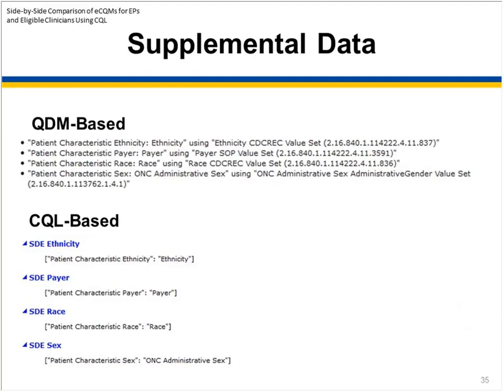Looking at the supplemental data section: we include the data criteria in the data criteria section, and in the supplemental data we reference expressions just like with all other population criteria. This allows more flexibility in defining what the supplemental data is for a measure — these can be any expression, providing flexibility in collecting additional information with the measure itself. Risk adjustment variables use this same mechanism, using the full flexibility of CQL to describe what risk factors are associated with the measure and how those should be gathered.